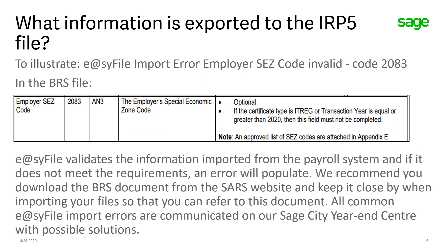To illustrate, let's look at EASY file import error: employer SEZ code invalid, code 2083. Code 2083 refers to the source codes that we just spoke about. So in the IRP-5 file, 2083 will be followed by the Special Economic Zone as captured on the payroll system. There is an approved list of Special Economic Zone codes attached in Appendix E of the Business Requirement Specification. If any code loaded on the system doesn't match those codes, an error will be generated when you import the file into EASY file, as it will be validated based on the information required.